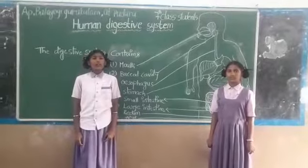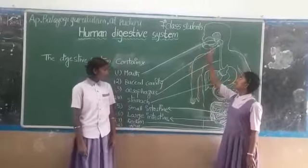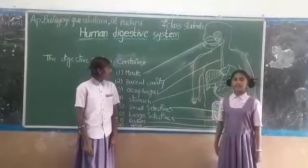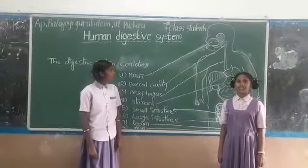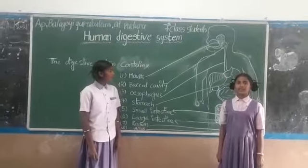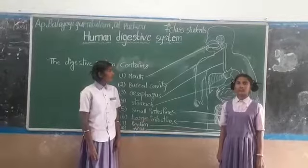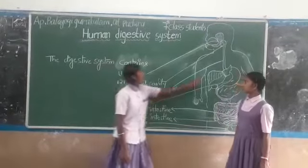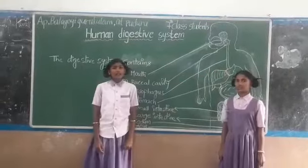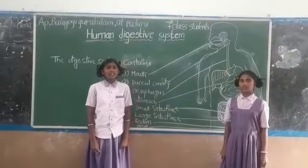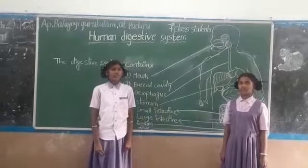The carbohydrate digestion starts here. This is the Pharynx. Pharynx is the common chamber for both the digestive tract and respiratory tract. It leads into the Esophagus. This is the Esophagus. Esophagus is a muscular tubular structure that connects the Pharynx to the stomach.